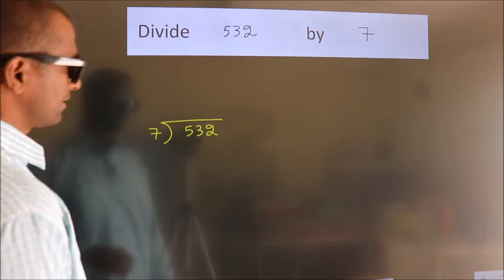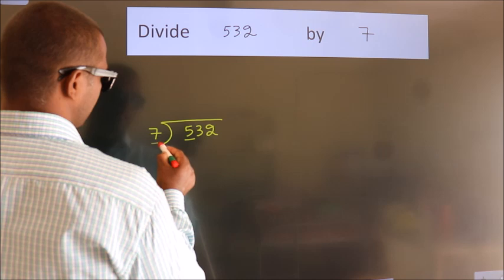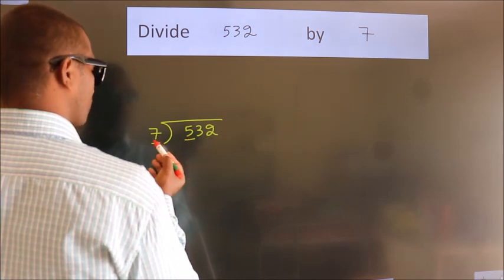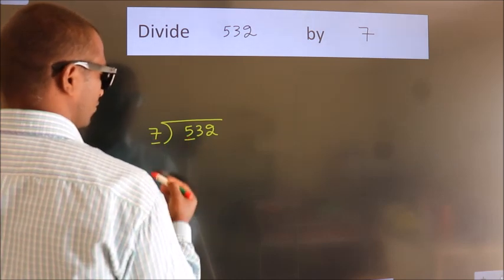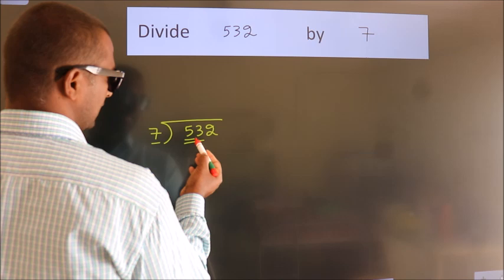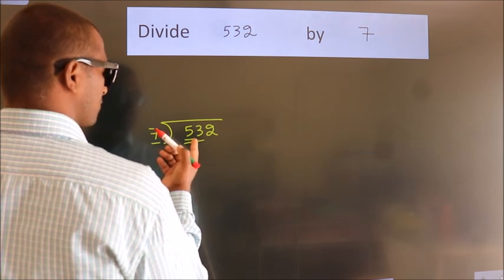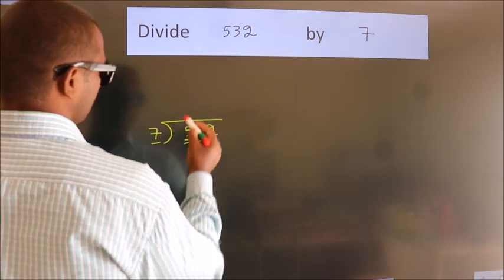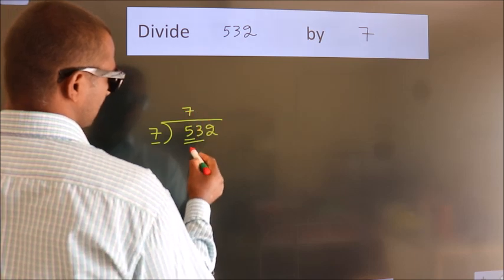Next. Here we have 5, here 7. 5 smaller than 7. So we should take 2 numbers, 53. A number close to 53 in 7 table is 7×7=49.